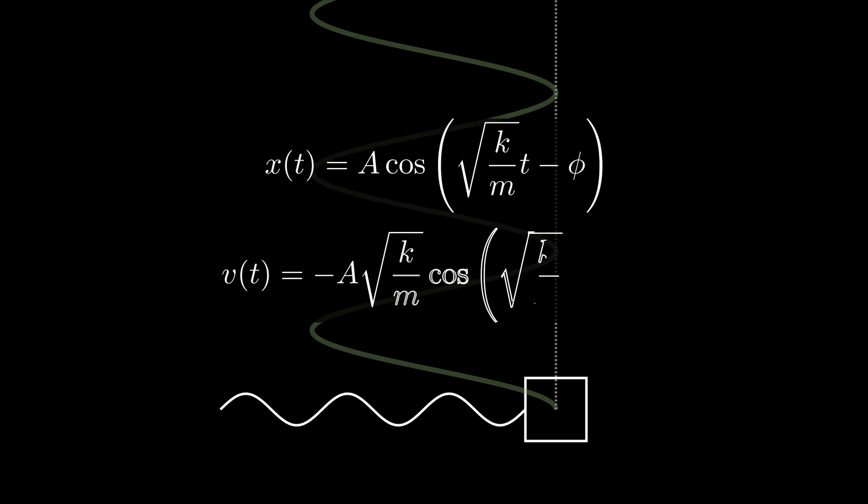Notice that because the displacement is sinusoidal, so is the velocity. If we know all the parameters—A the amplitude, φ the phase factor where we start our clock, m the mass of the block, and k the spring stiffness—then using these equations, we know exactly where the block will be after any amount of time has passed.